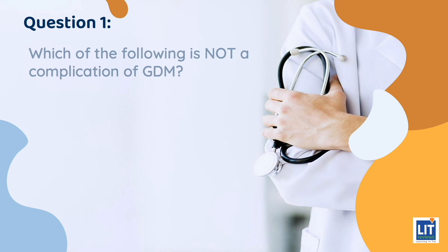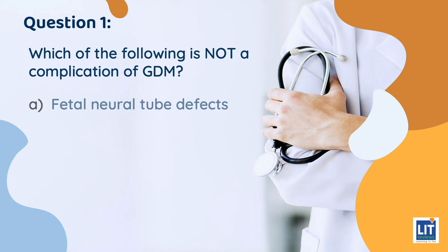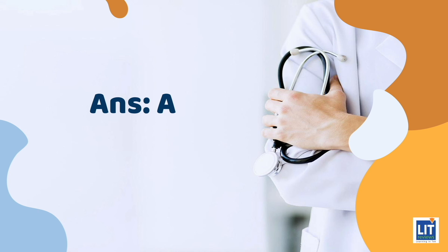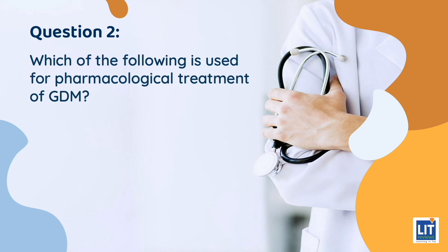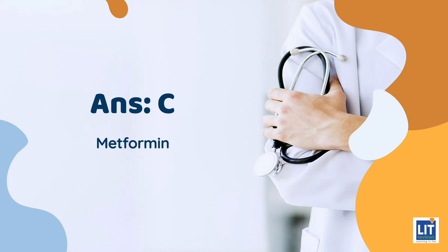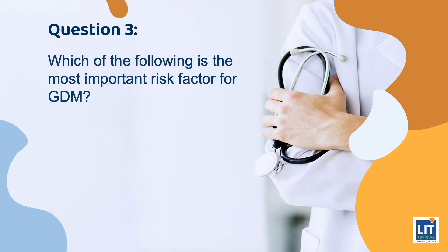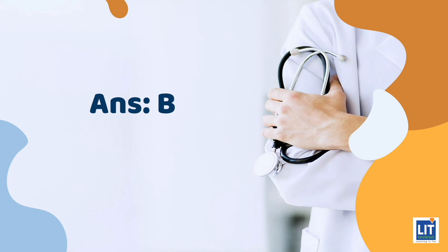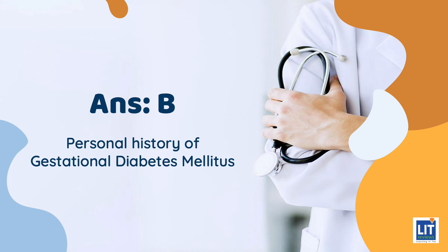Quiz time. Which of the following is not a complication of GDM? The answer is A: fetal neural tube defects. Question 2: Which of the following is used for pharmacological treatment of GDM? The answer is C: metformin. Question 3: Which of the following is the most important risk factor for GDM? The answer is B: a personal history of gestational diabetes mellitus.